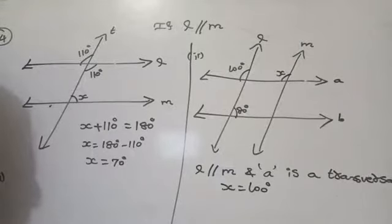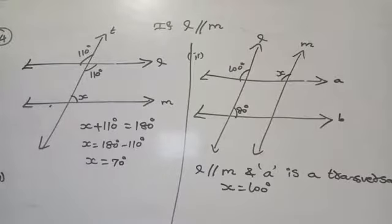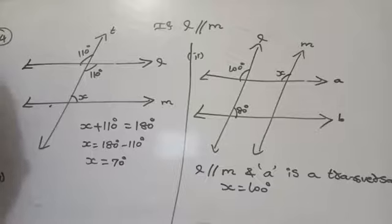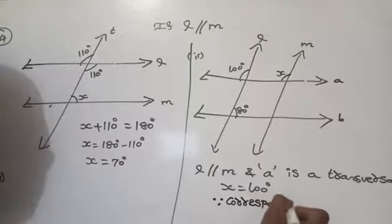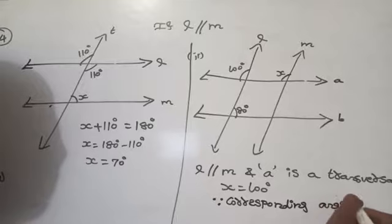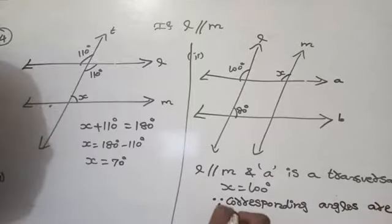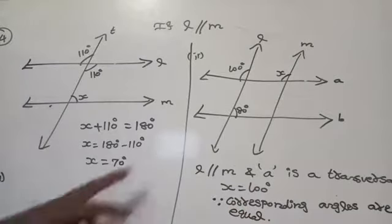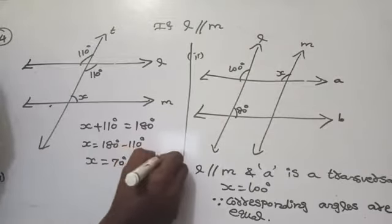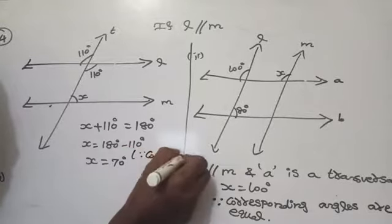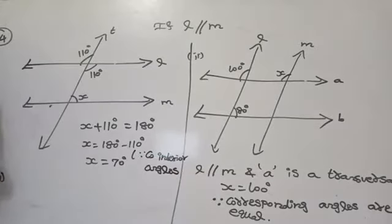You have to tell the reason also. Whenever you are doing the geometrical part, you have to write down the reason with your answer. What is the reason? Corresponding angles are equal. Since corresponding angles are equal. Here, co-interior angles on the same side of the transversal are supplementary.